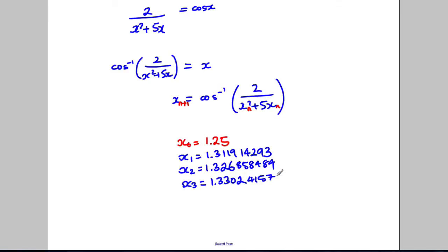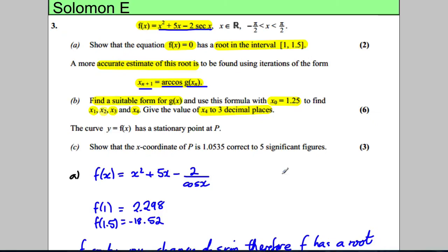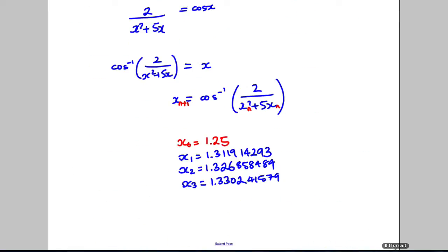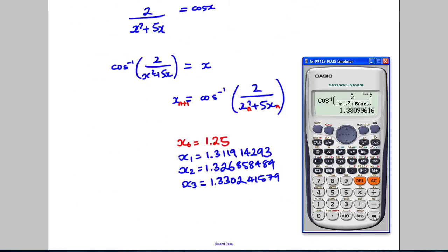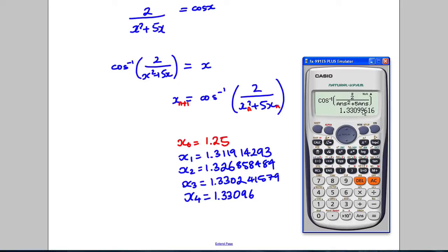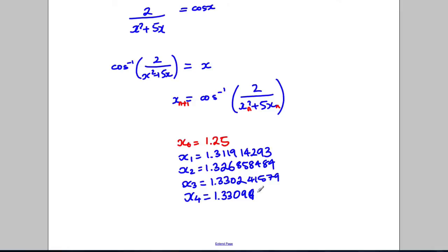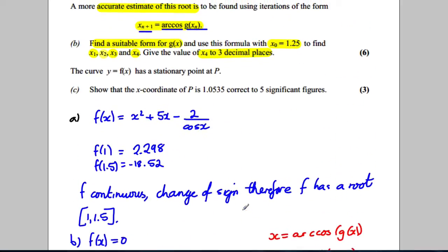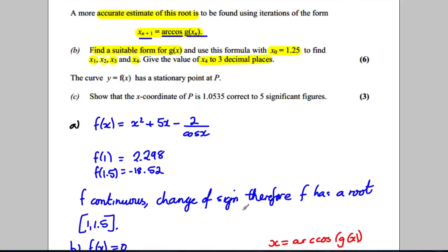And they wanted x3. They want it all the way up to x4 actually. So one more. Press equals again. 1.330996. So x4 equals 1.3309996 16. And they wanted x4 to 3 decimal places. So it would be 1.331 to 3 decimal places. Rounding at that point there. So we've given our answer to 3 decimal places and we're done.